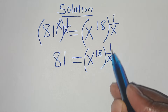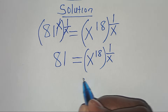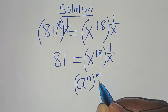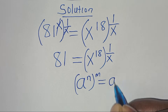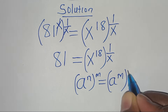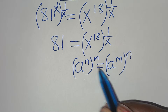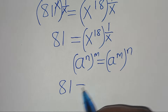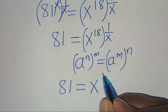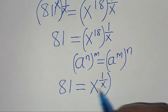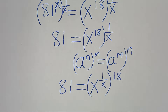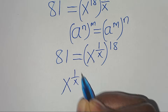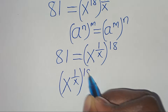This is equal to x to the power of 18 raised to the power of 1 over x. Now x to the power of 18 raised to the power of 1 over x is in the form of a to the power of n raised to the power of m, which we can express as a to the power of m raised to the power of n. So this essentially means we can reverse the powers. So we have 81 equal to x to the power of 1 over x, raised to the power of 18.